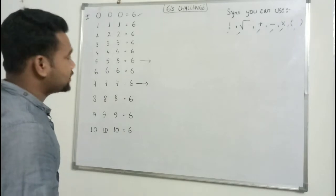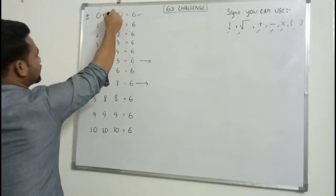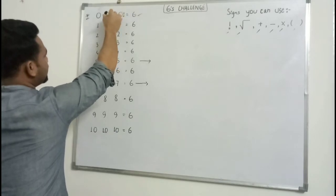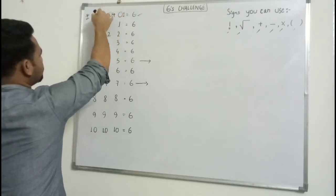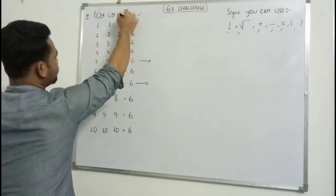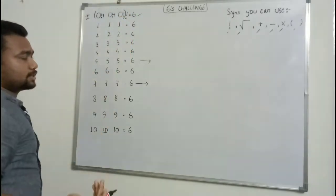So zero we already showed how we calculated. We use plus, then after that zero we put factorial, and then bracket, and after bracket we'll put a factorial sign. And it becomes six.